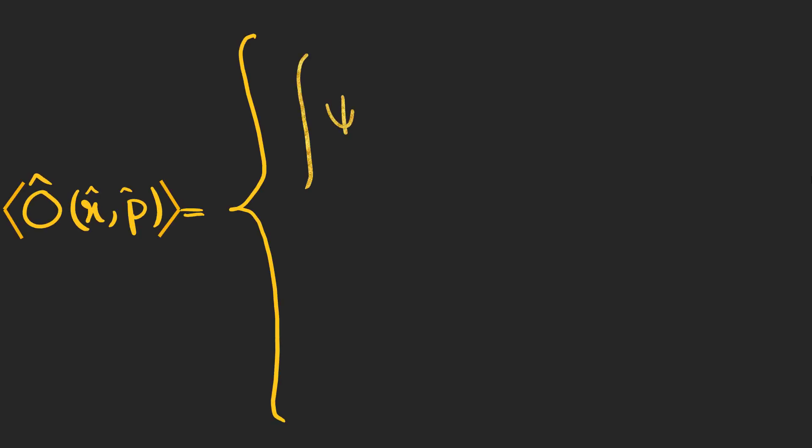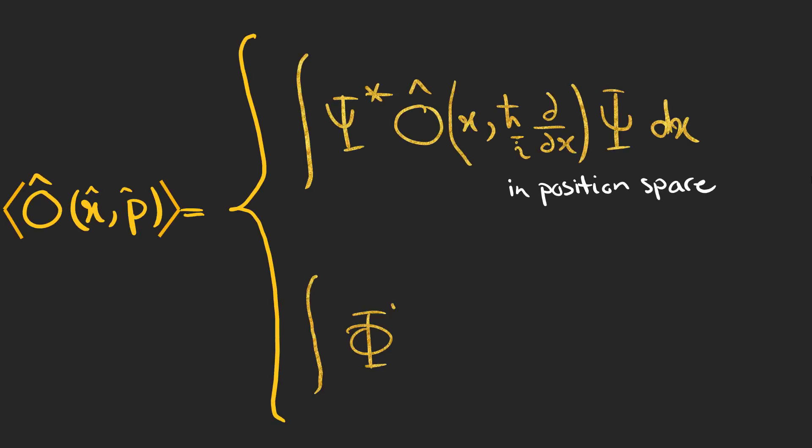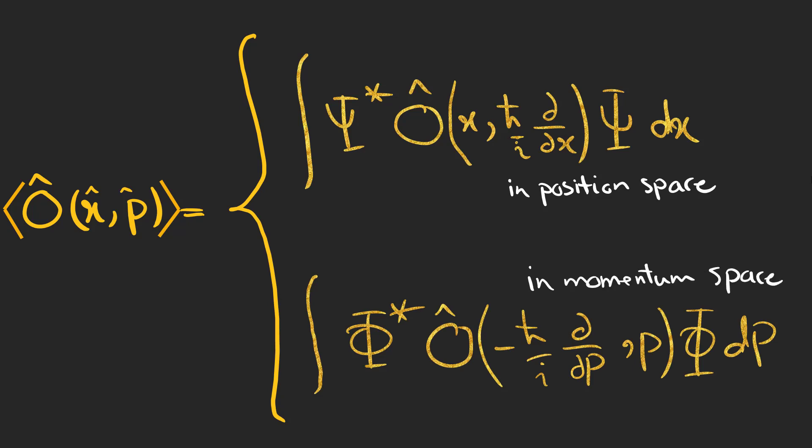To find the expectation value of any operator in position space and momentum space we have these two different integrals which can be used based on our problem.